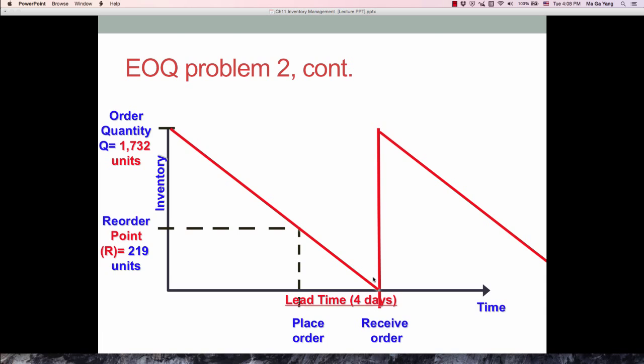So after 4 days of lead time, inventory goes up to EOQ, which is 1,732 units. Then inventory goes down. And when we reach the reorder point, we reorder. So after the 4 days of lead time, inventory goes up to 1,732 units. So that's the fixed order quantity, and this pattern is repeated. That's the EOQ.